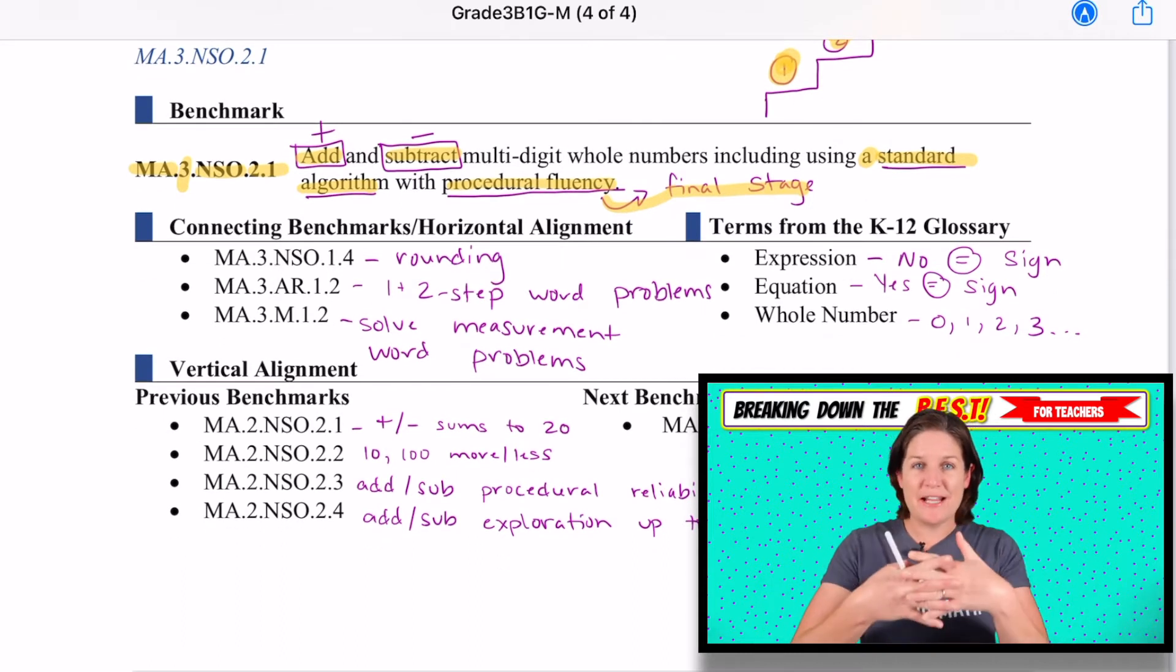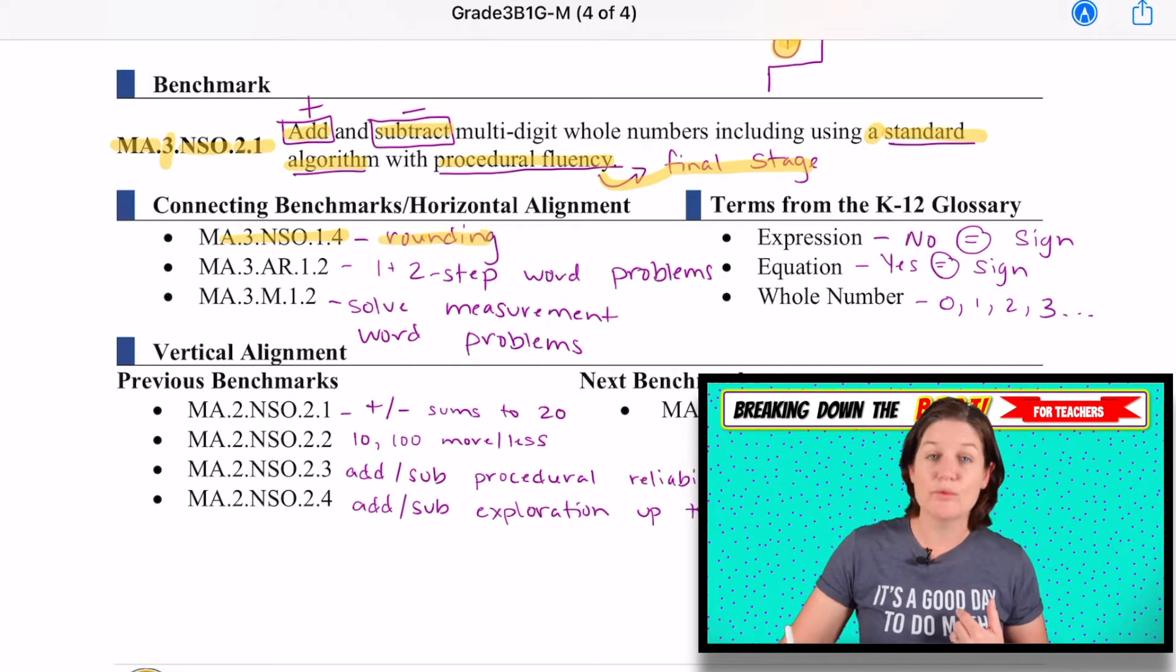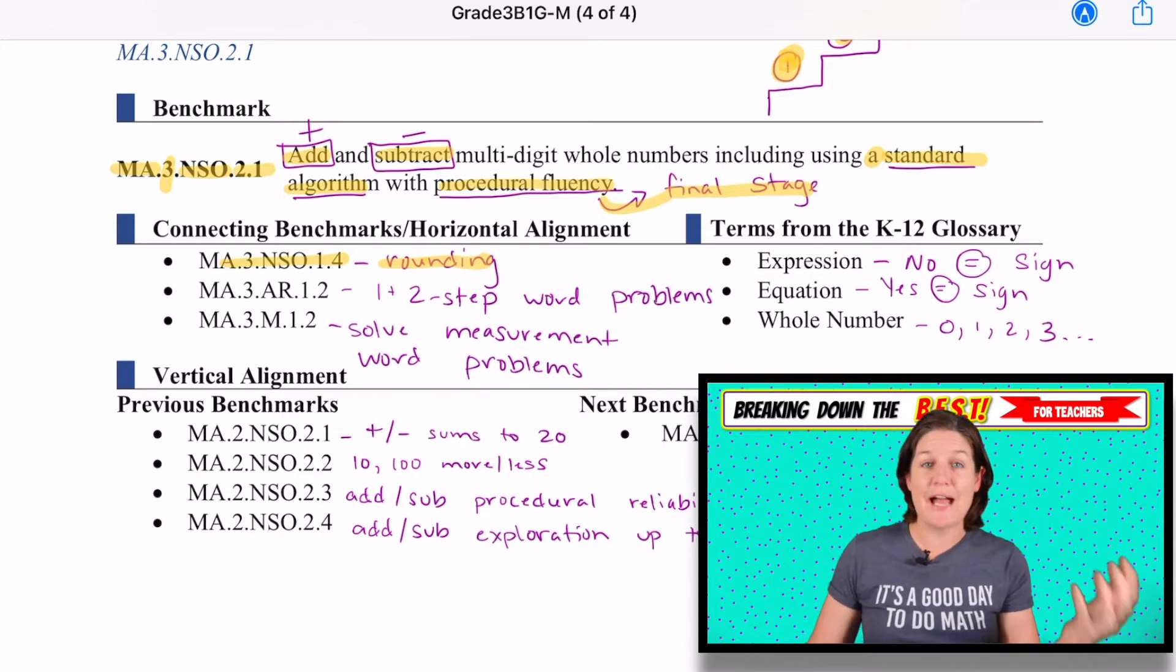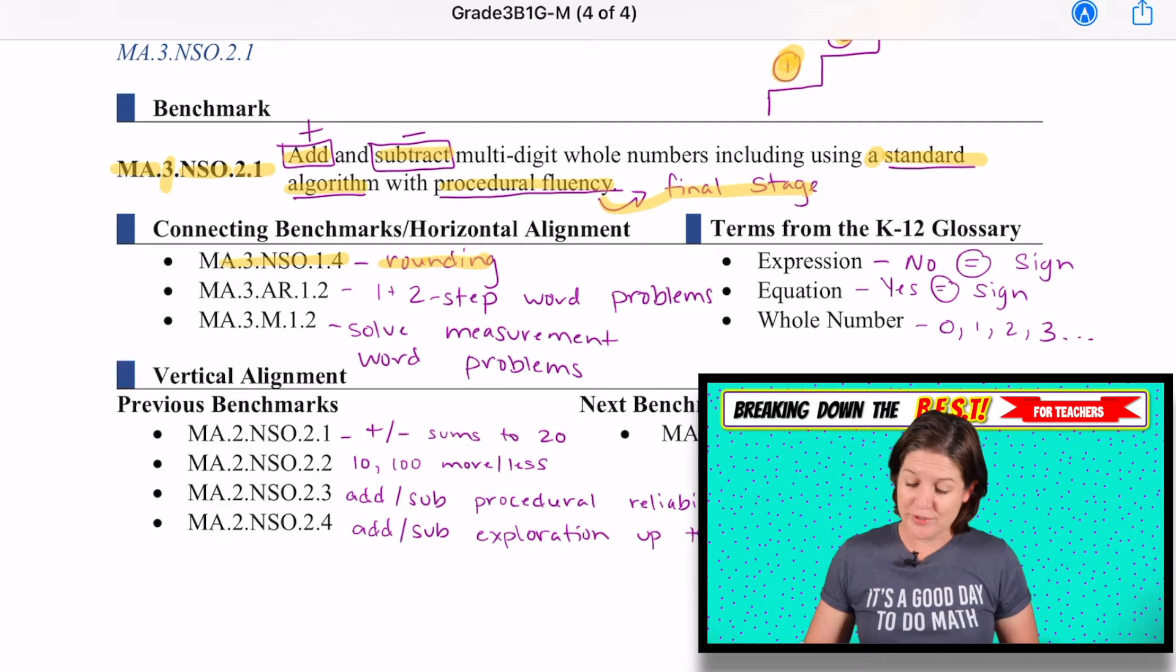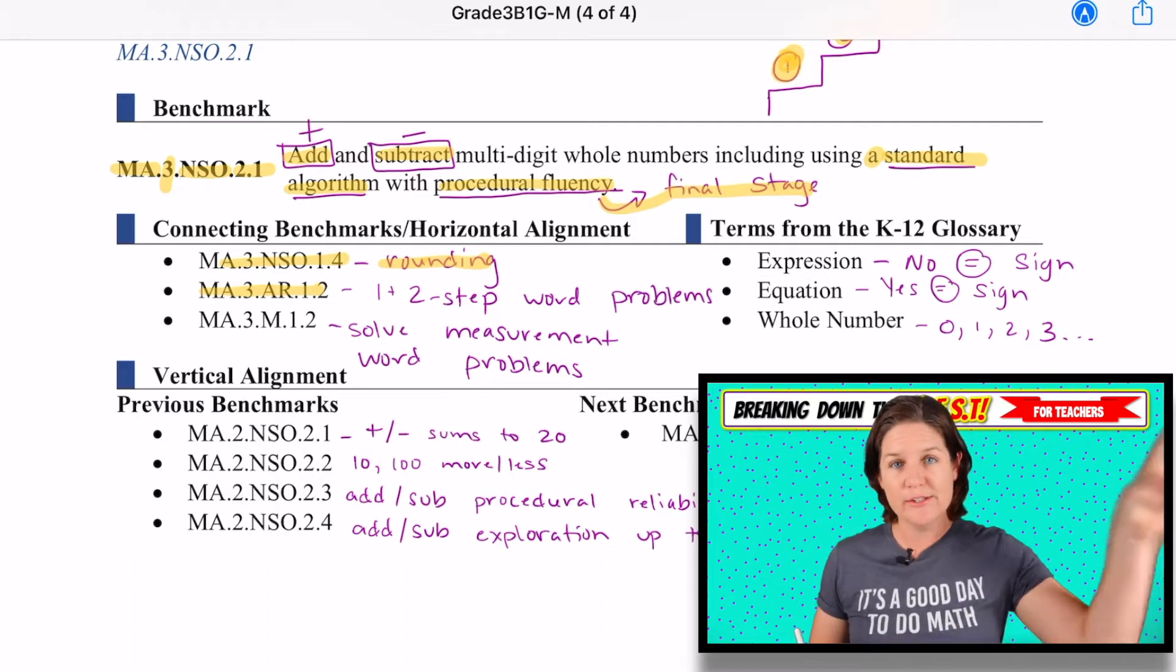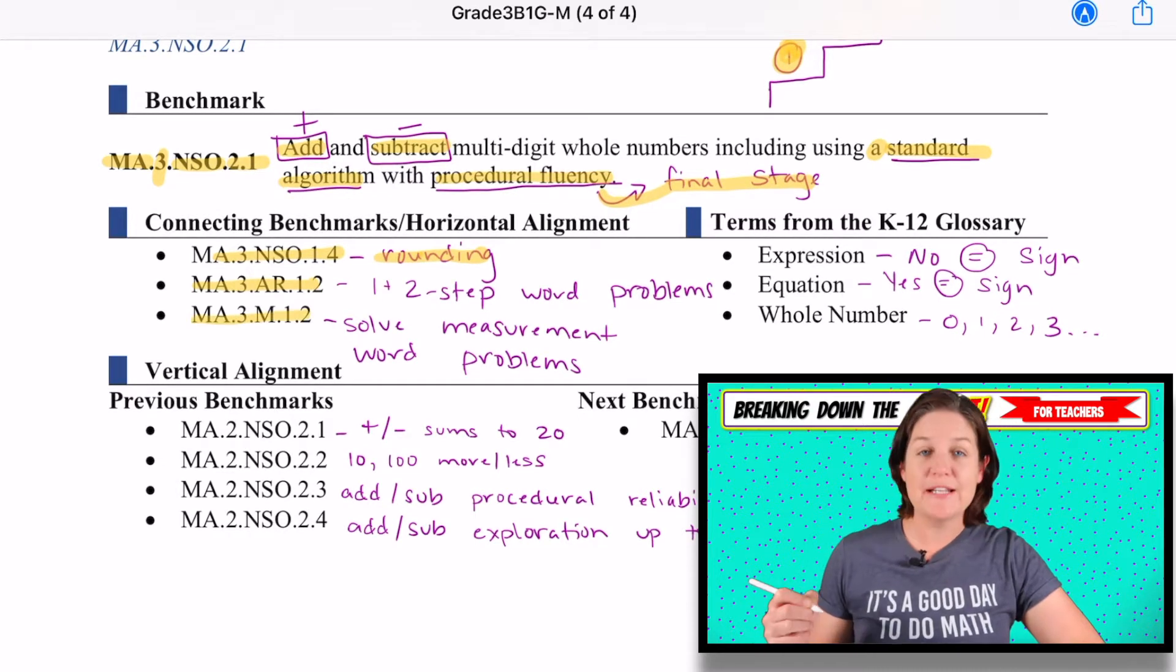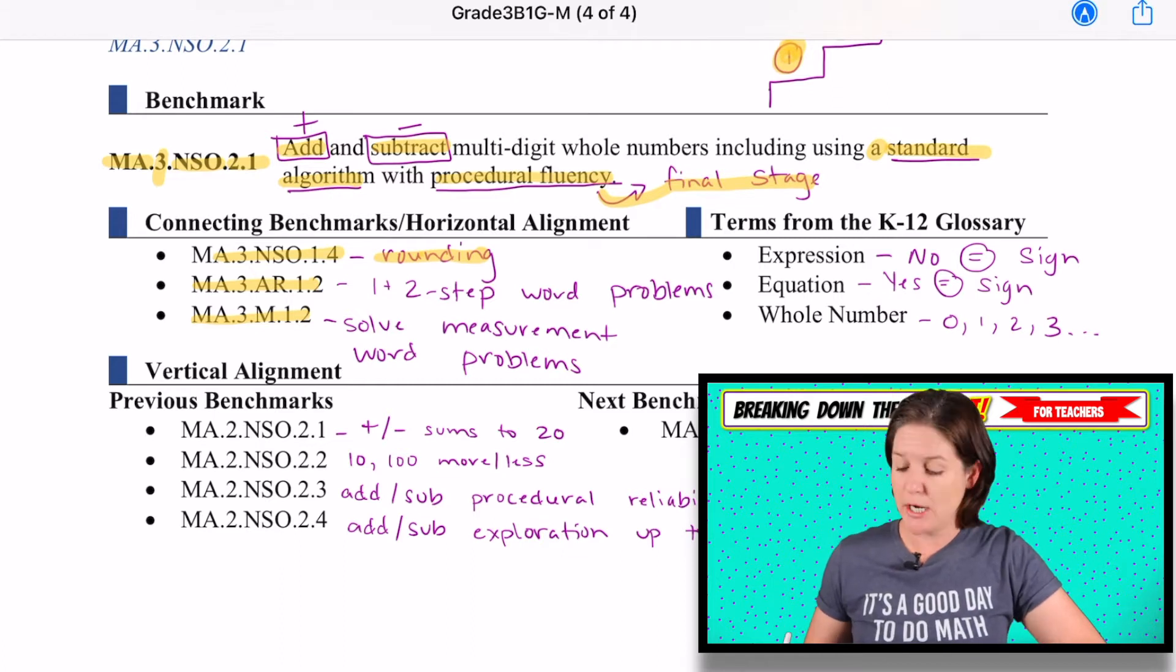All right, let's see what other connecting standards go with this. So we know NSO.1.4 for third grade, that's rounding, which is awesome because through rounding we can become better at estimating. And I highly suggest that while you're adding and subtracting numbers with the standard that you have your students round to determine the reasonableness of an answer first. We also have 3.AR.1.2, which is one and two step word problems with four operations. Two of those operations are adding and subtracting. We also have MA.3.M.1.2, which is solving measurement word problems.